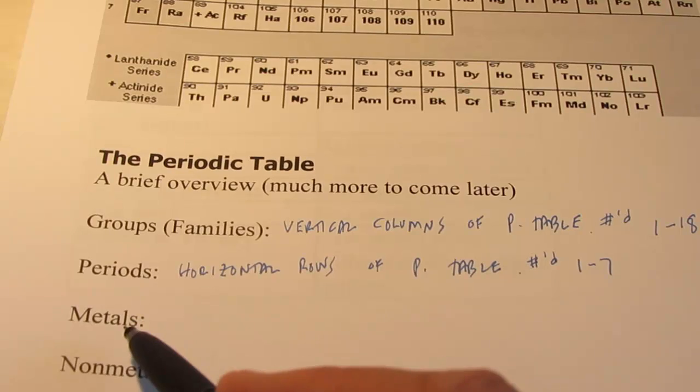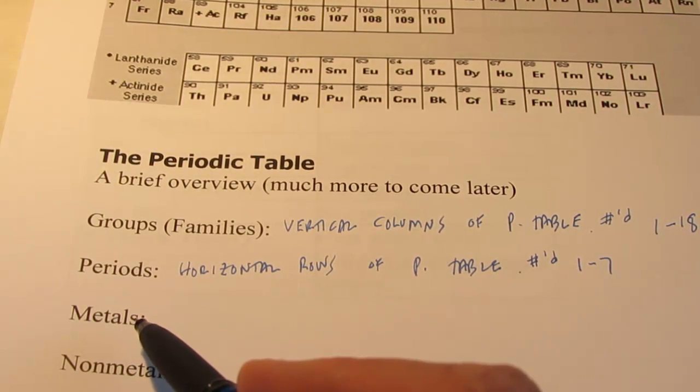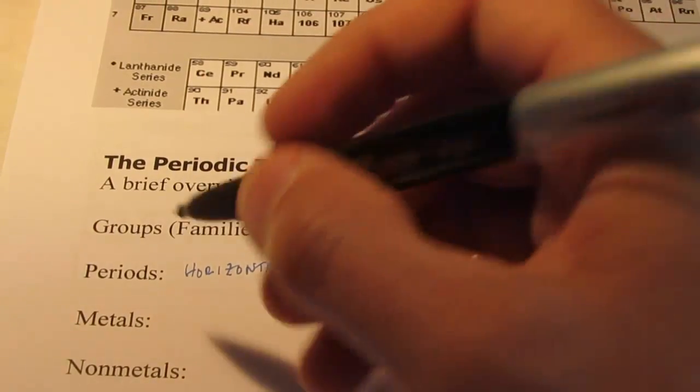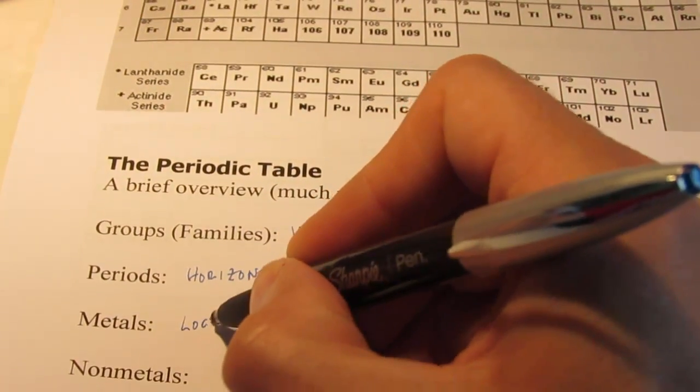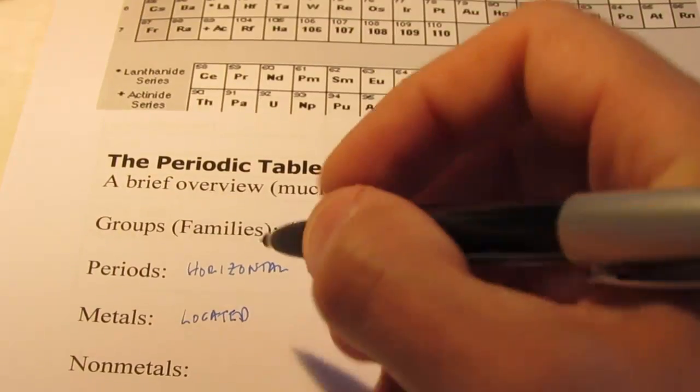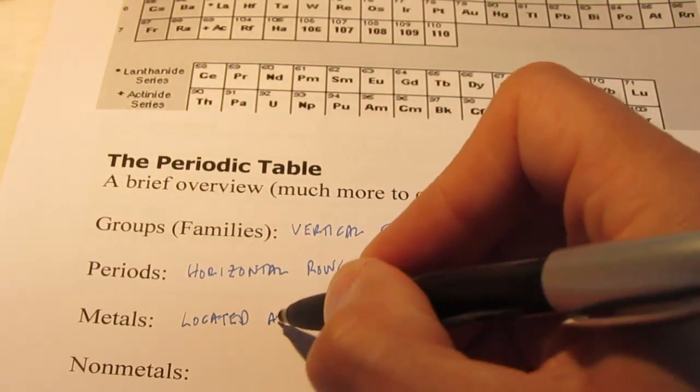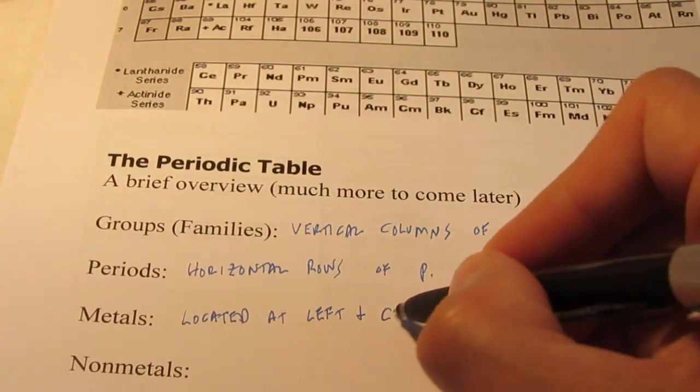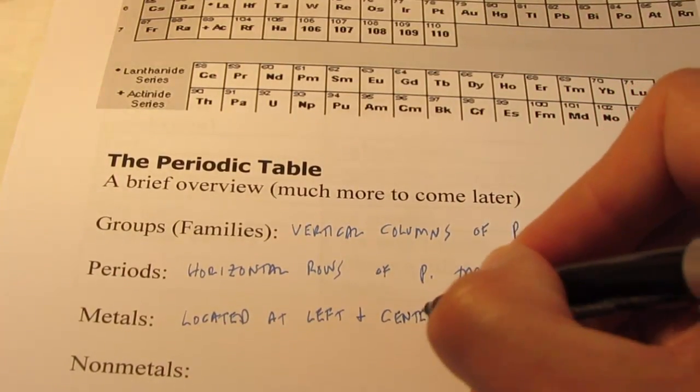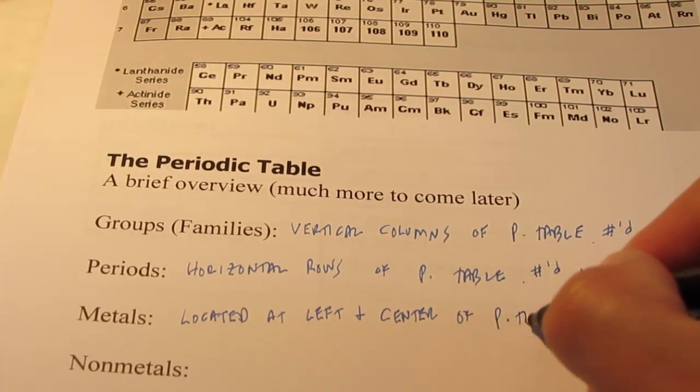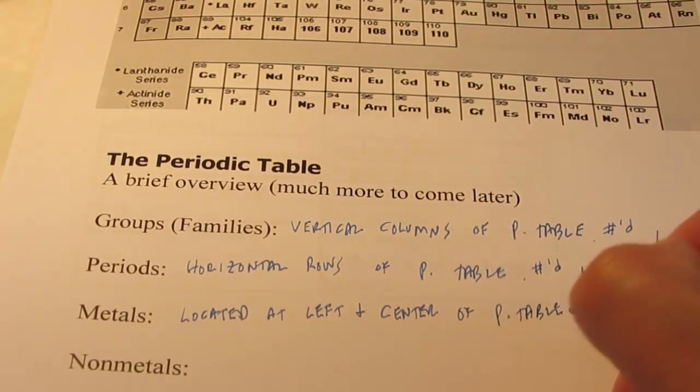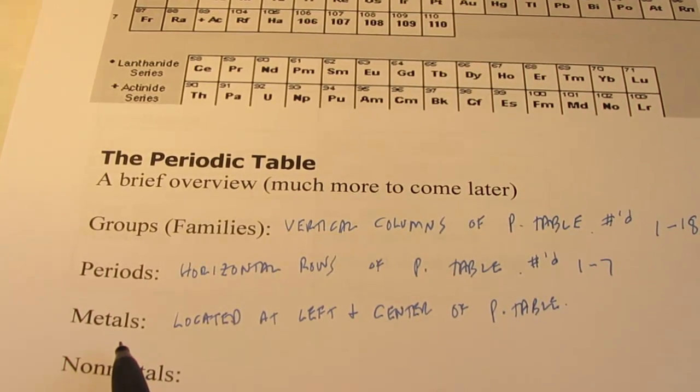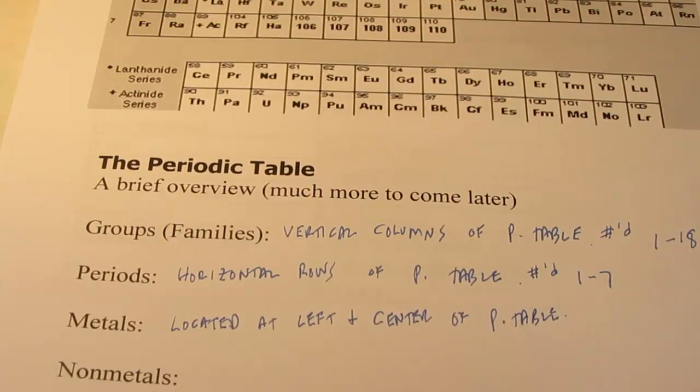Now, for metals, I don't really want to define what a metal is right now. I just want you guys to know where they are located on the periodic table. So, the metals are located at the left and the center of the periodic table. Now, there is one exception to this. Hydrogen is not considered to be a metal. Hydrogen is a non-metal.